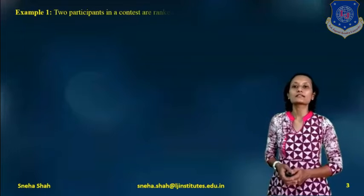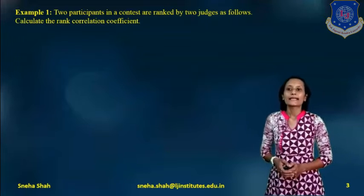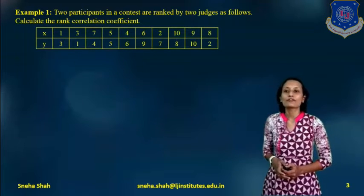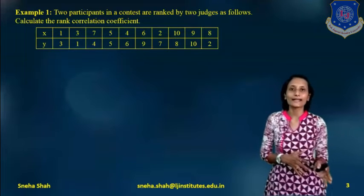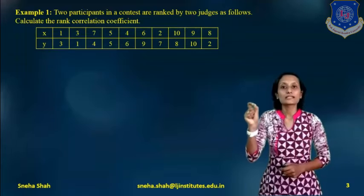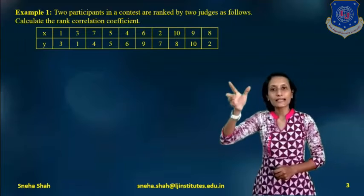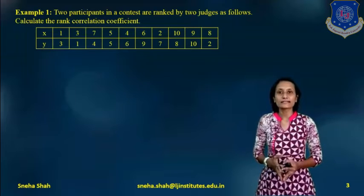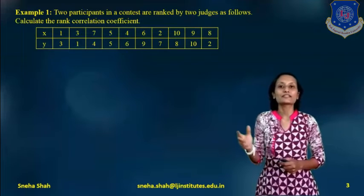To understand this, we are solving some examples. The first example: two participants in a contest are ranked by two judges as follows. Calculate the rank correlation coefficient. Two judges are given in the form of x and y. The values given are 1, 3, 7, 5, 4, 6, 2, 10, 9, and 8. Judge x defines ranks 1 through 10, and the same is done by judge y.